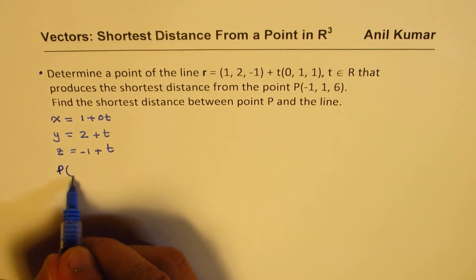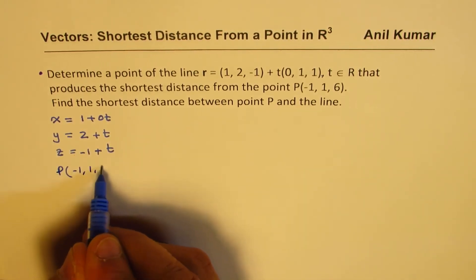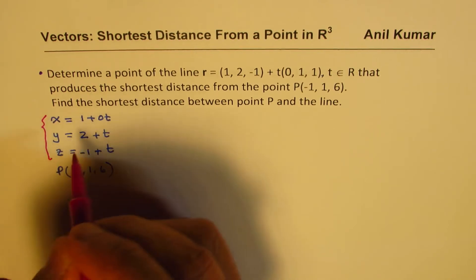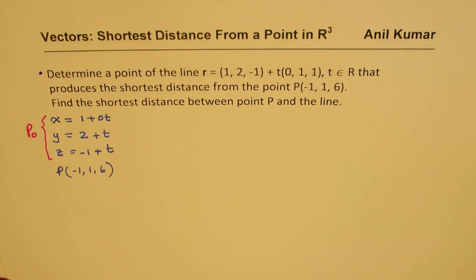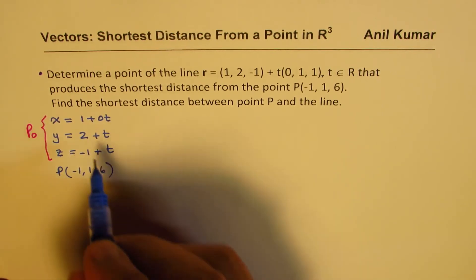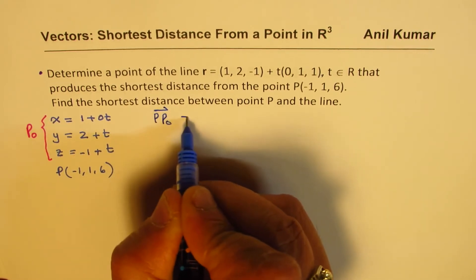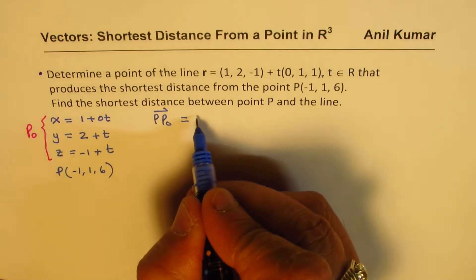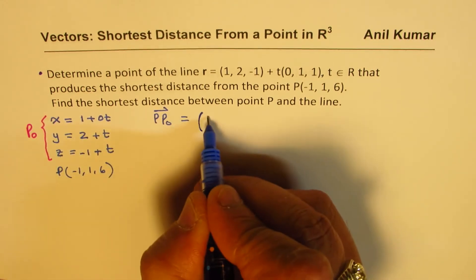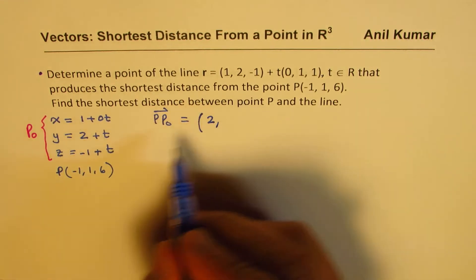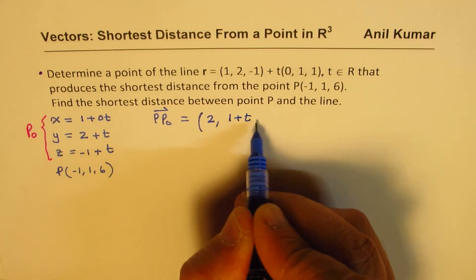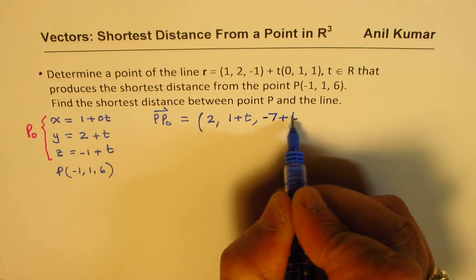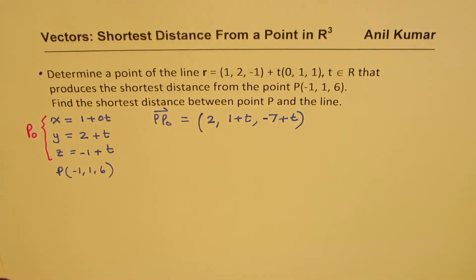Now we have an external point given to us, which is P = (−1, 1, 6). What is the direction vector PP0 between this general point and P? We compute PP0 as: (1 − (−1), (2 + t) − 1, (−1 + t) − 6) = (2, 1 + t, −7 + t). The direction of the line is M = (0, 1, 1).